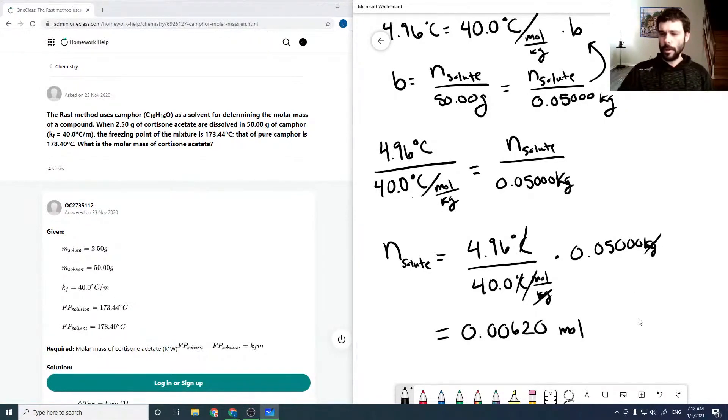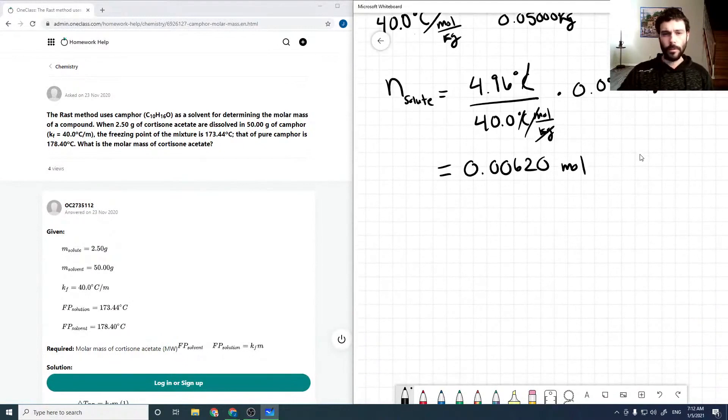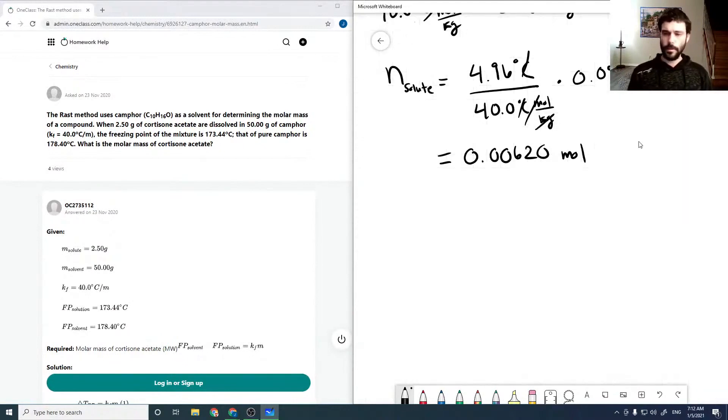So there's our moles of solute. And now it asks us for the molar mass of our solute. So the molar mass is equal to the mass over the molar mass. And so these will all be solute, as we're looking for the molar mass for our solute.